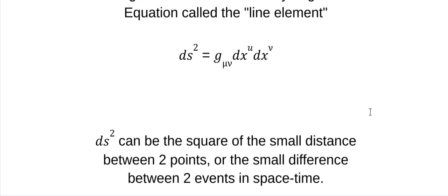So what is this thing? Well, as an example, in Euclidean space, dS squared could be a small distance between two points. In general relativity, in spacetime — which is four dimensions — it could be the difference between two events. So one person is stationary and one is traveling at high speeds; they're going to see the distance in time differently, but if they use this equation, they're going to measure the same thing.